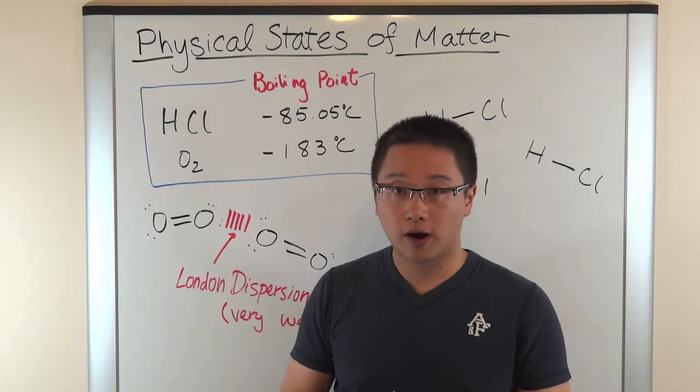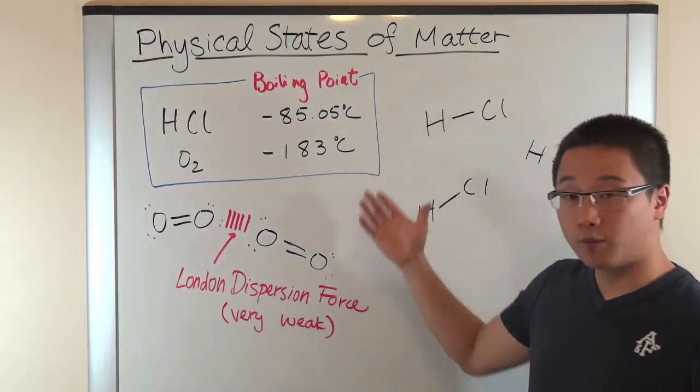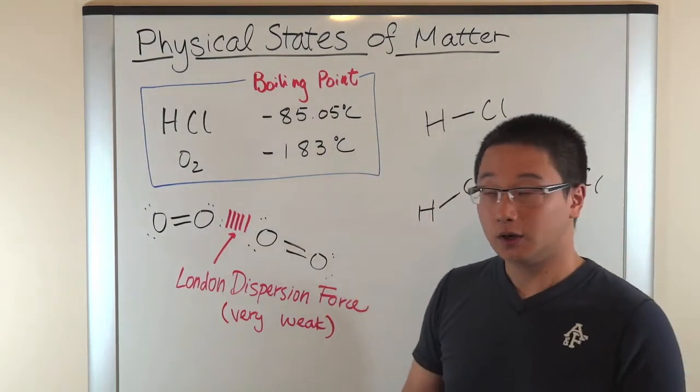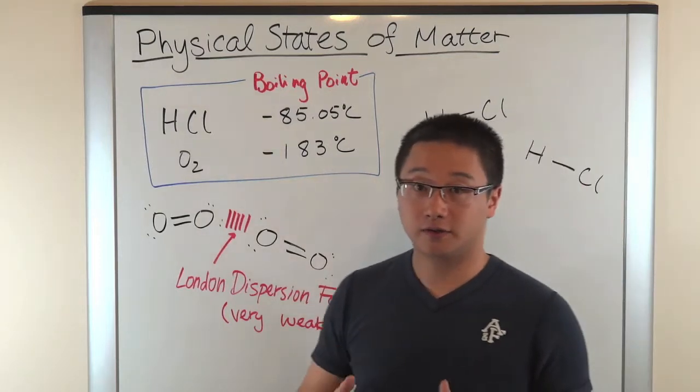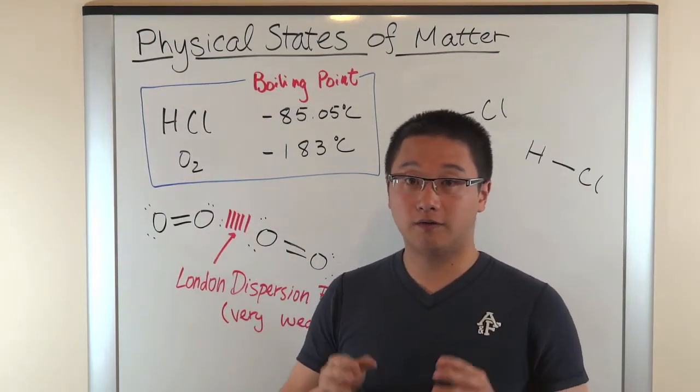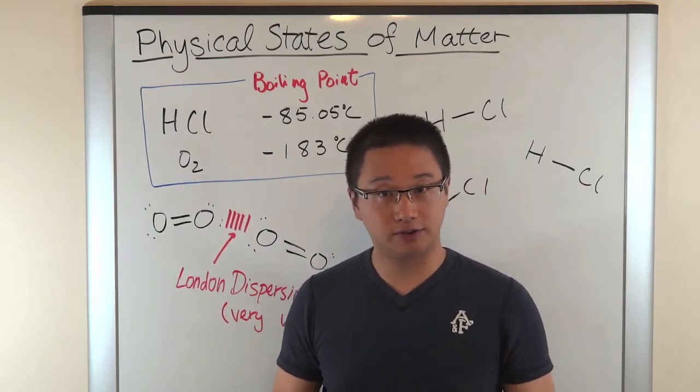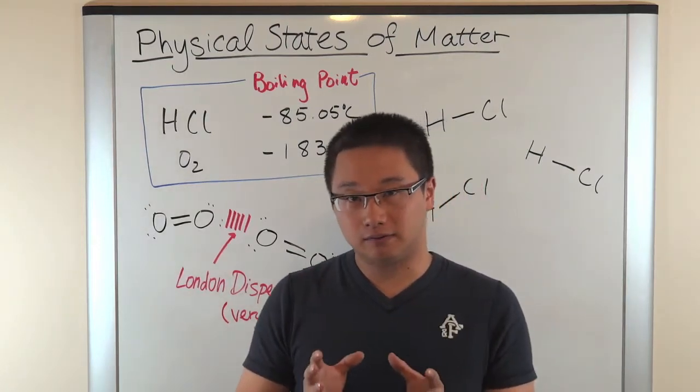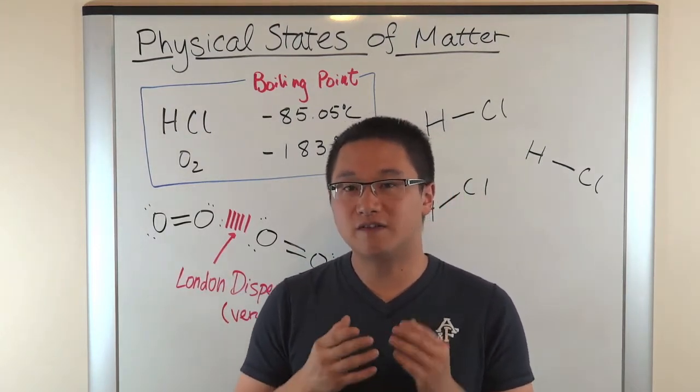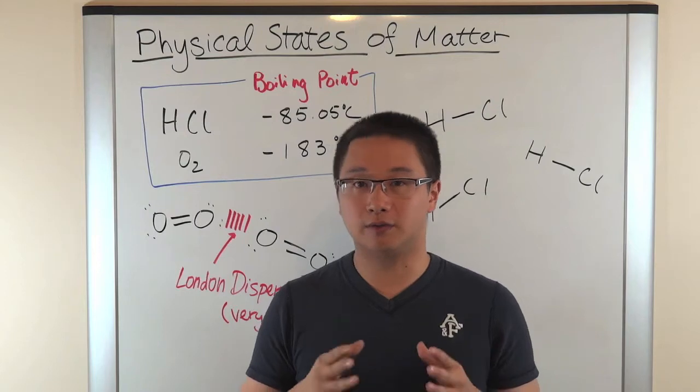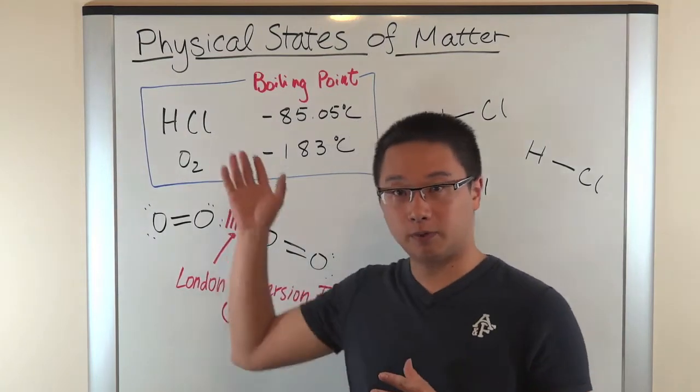Now, for hydrogen chloride, the boiling point is -85.05 degrees Celsius, whereas oxygen has a much lower boiling point of -183 degrees Celsius. So what does that mean when we look at these two numbers? What kind of information can we extract from here between these two numbers?